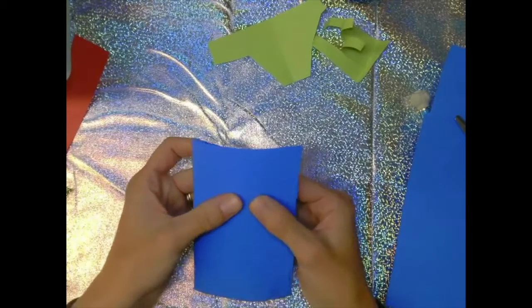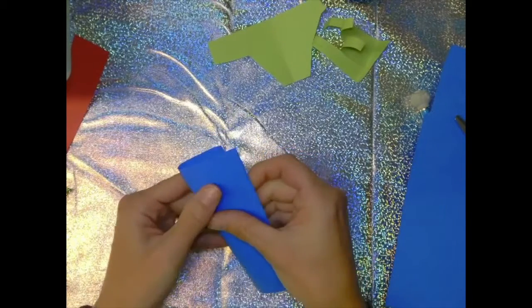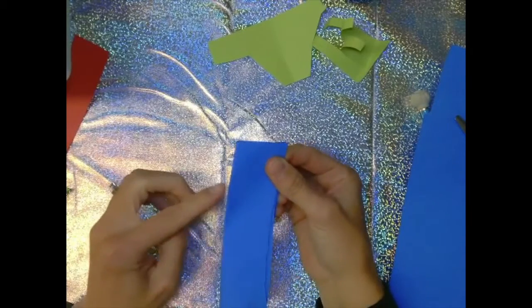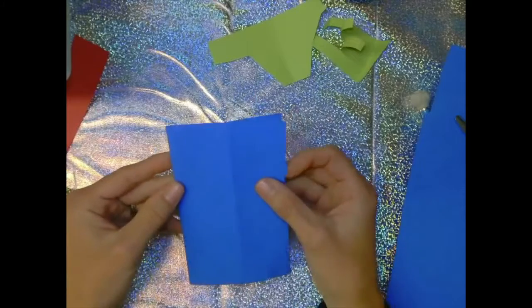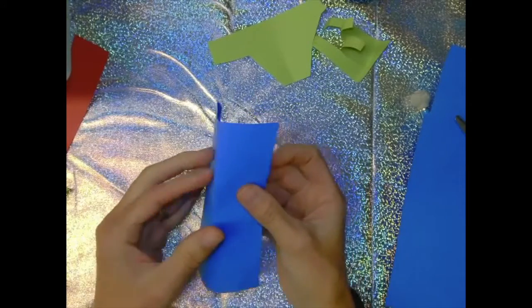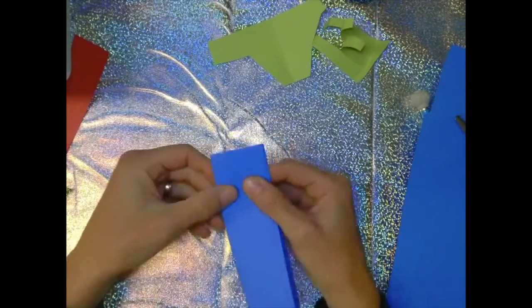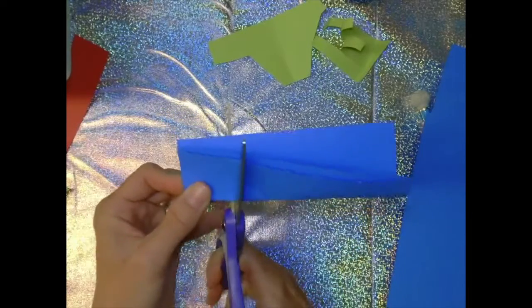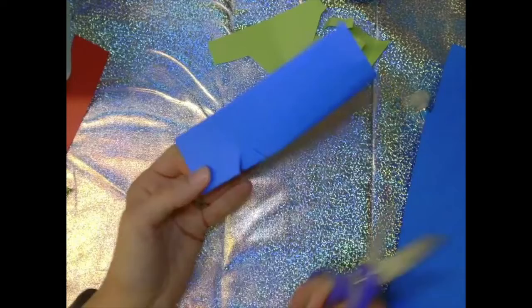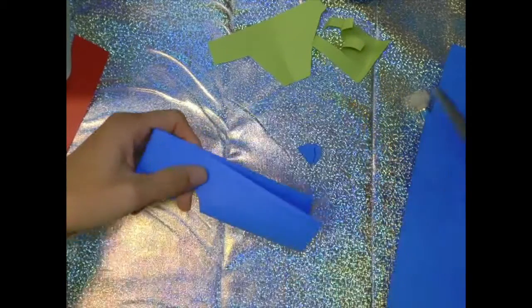I'm going to fold it in half again like this. And now I'm going to cut it out of that fold. So I folded it once and then I folded it twice. And now I'm going to cut out of this fold. I mean out of this fold. So maybe I'll want an eye shape like that.